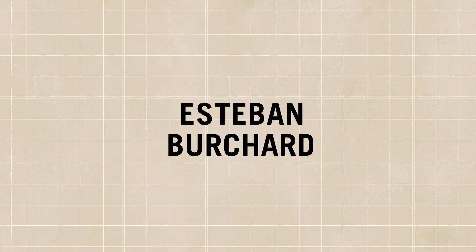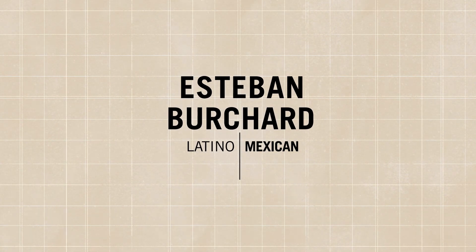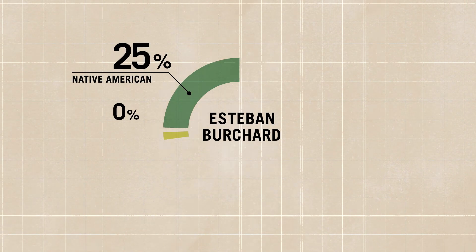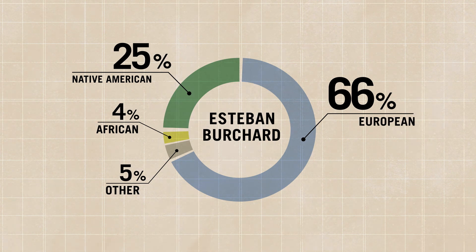That's an archaic terminology that really doesn't fit. For example, I'm Latino, identifying as Mexican, but my genetic ancestry actually has three racial groups: Native American, African, and European. So I have three racial groups within me. I identify as being Hispanic, and I don't neatly fit into any one of those boxes. That's a conundrum.